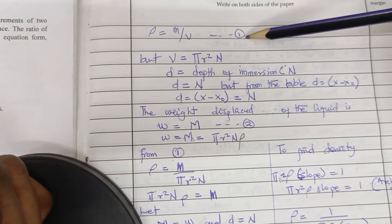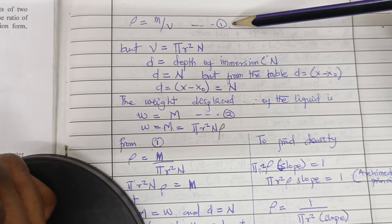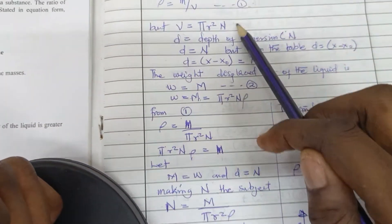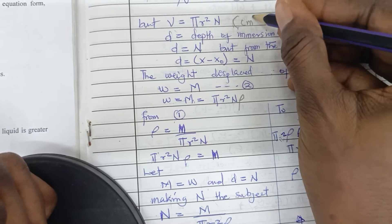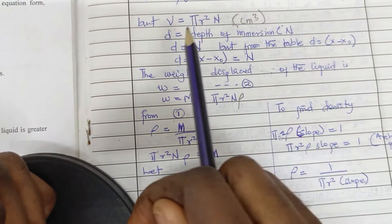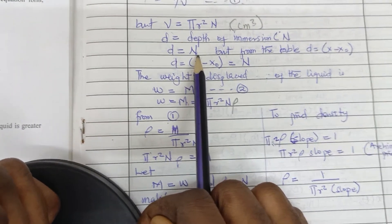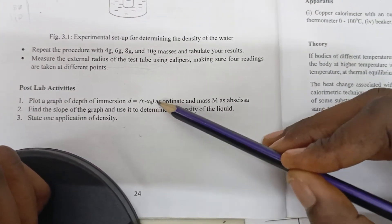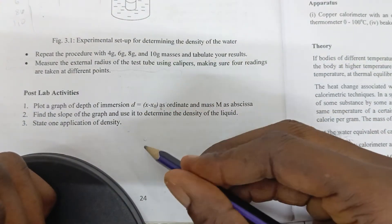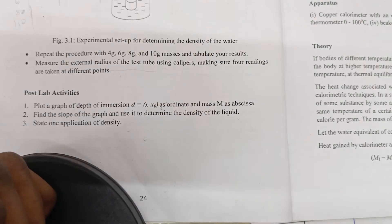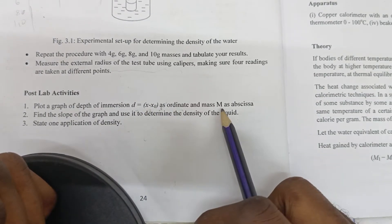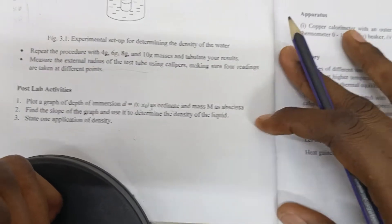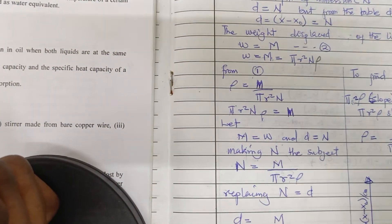Our volume equals this expression. Also, d equals n as we established. From the book we can also see that d equals x minus x₀, so we will be plotting a graph of d equals x minus x₀ as the ordinate and m as the abscissa.